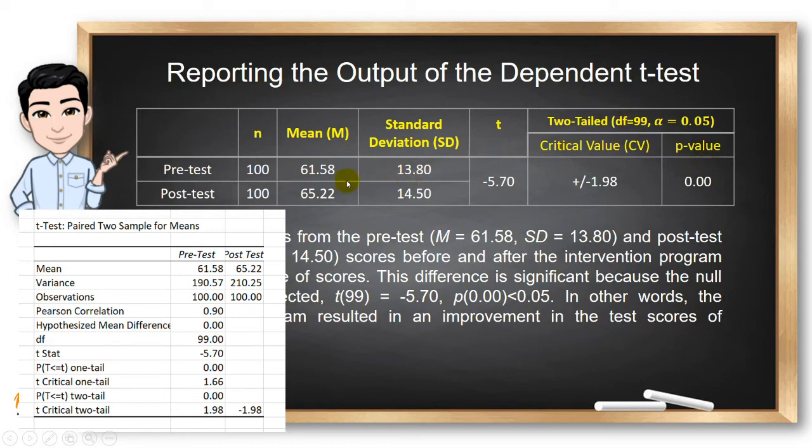You can see here that I got these two means in our summary table in Microsoft Excel. To get the standard deviation, all you need to do is to get the square root of the variance here.